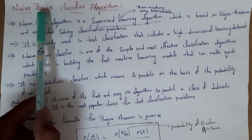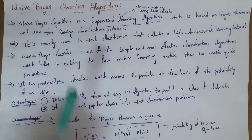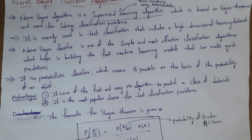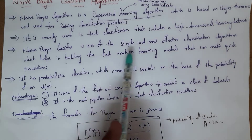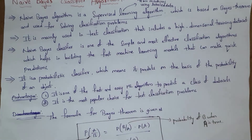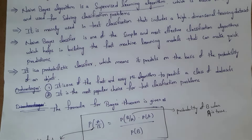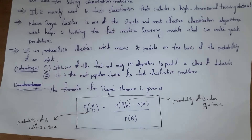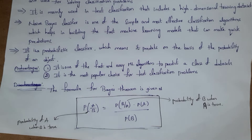The name itself says Naive Bayes classifier, meaning this algorithm uses Bayes' theorem to solve classification problems. This algorithm will solve classification problems, but mainly it is used to solve text classification problems which contain high-dimensional training datasets. Naive Bayes classifier is one of the simplest and most efficient classification algorithms. We can call this a probabilistic classifier because it can predict the probability of an object.